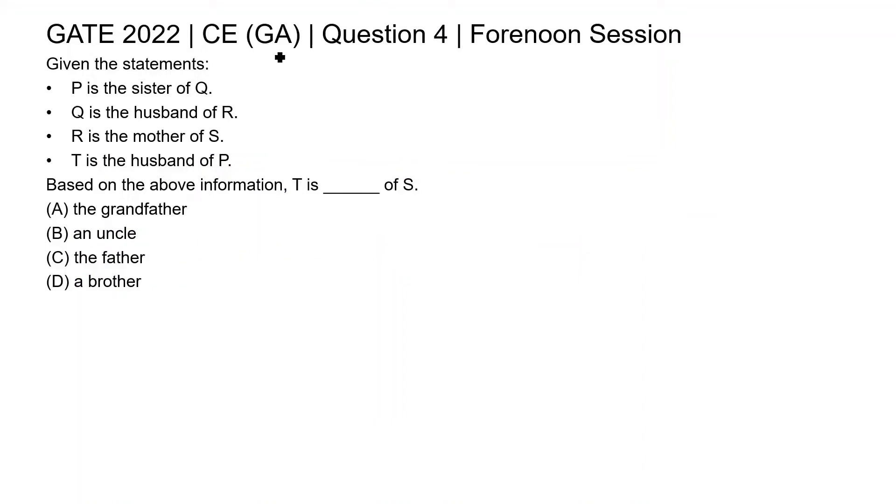This is question 4 of Civil Engineering General Aptitude section of GATE 2022 forenoon session. Given the statements: P is the sister of Q, Q is the husband of R, R is the mother of S, T is the husband of P. Based on the above information, T is blank of S. In this question, relationships between few persons are given. We need to find the relationship between T and S.